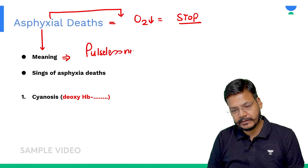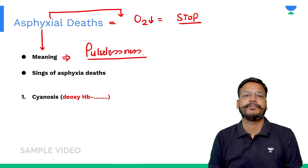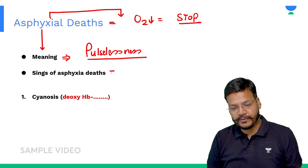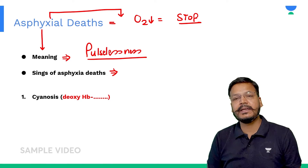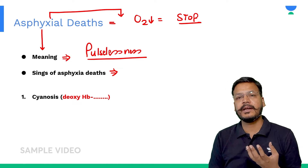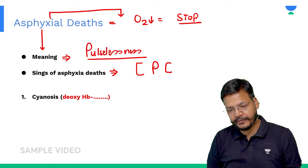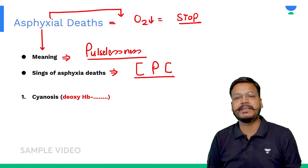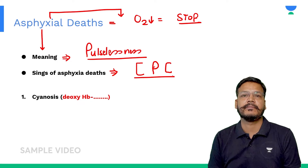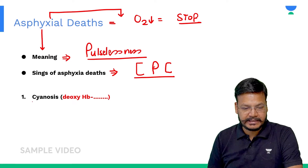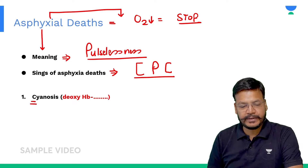If you get a question on what is the classical triad of asphyxia, the answer is CPC. CPC — what is CPC? C for the first sign, P for the second, and C for the third.